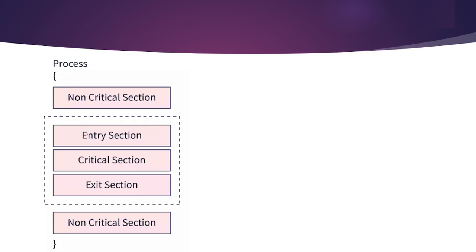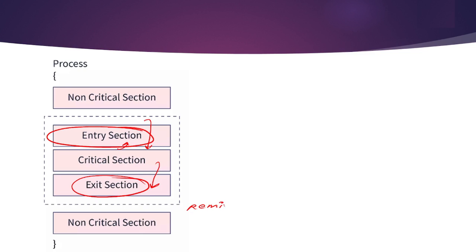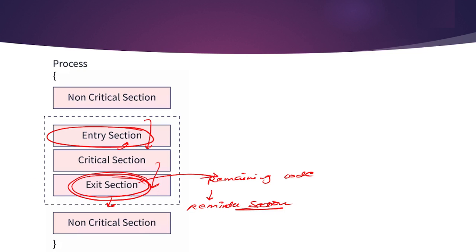The entry section is the section above the critical section, and any process entering the critical section must pass through this phase first. The exit section is the section below the critical section, and every process must go through it. Below the exit section is the remainder section, which contains the remaining code left after execution.